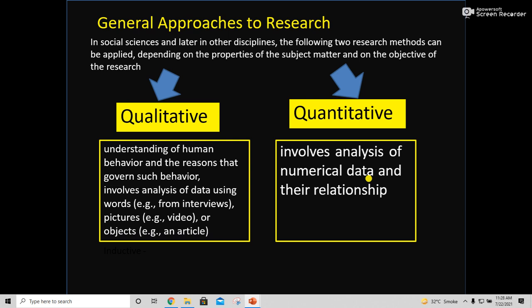In social sciences and later in other disciplines, the following two research methods can be applied depending on the properties of the subject matter and on the objective of the research. Qualitative research is that type of research by which we can understand human behavior and the reasons that govern such behaviors. It involves the analysis of data by using words, for example from interviews, from pictures, from videos, or objects, or in articles.